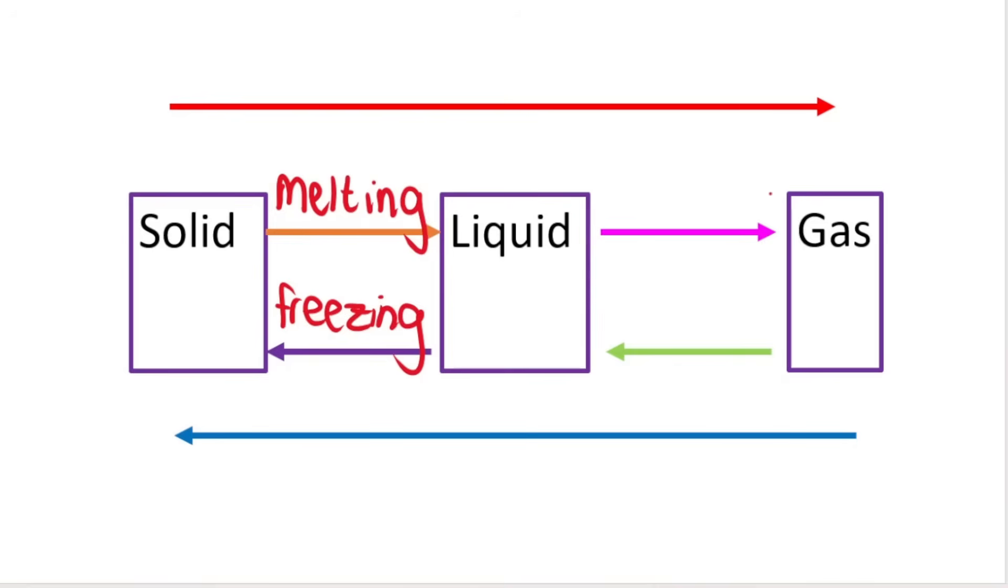If I go from liquid to gas, it's either called boiling, think about boiling a kettle, or it is called evaporation. Either or, boiling or evaporation. If I go the other way, so a gas back to a liquid, it's called condensation. And we can see that inside a kettle when we boil something. We see the little water droplets condensing, the gas going back into a liquid form on the sides of the kettle.